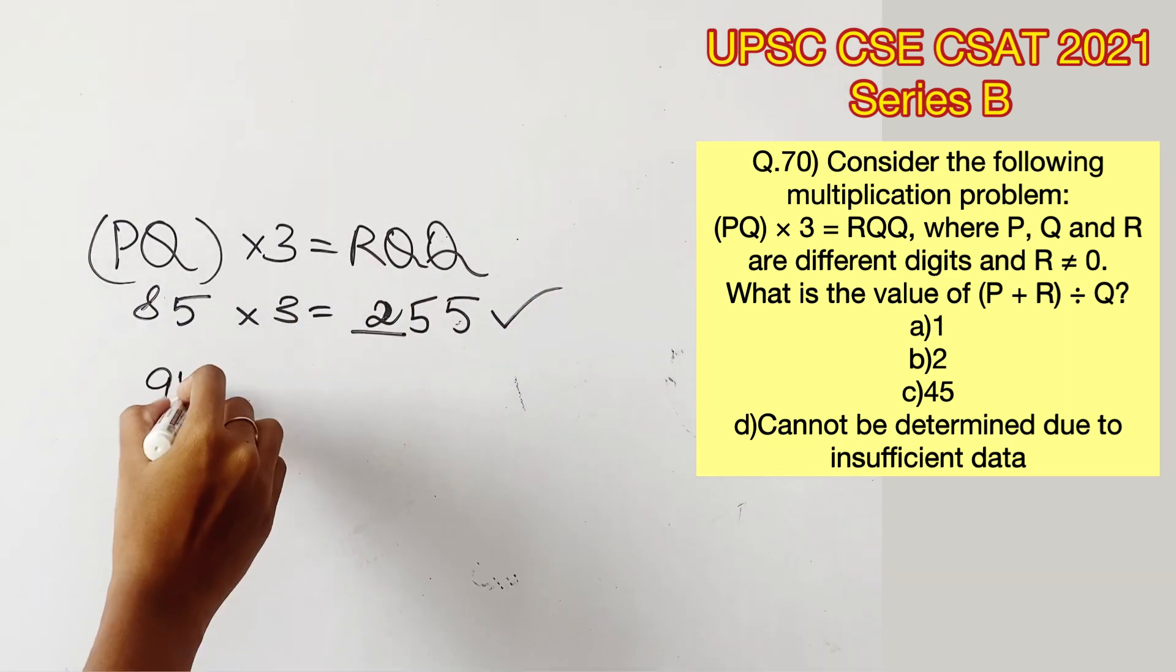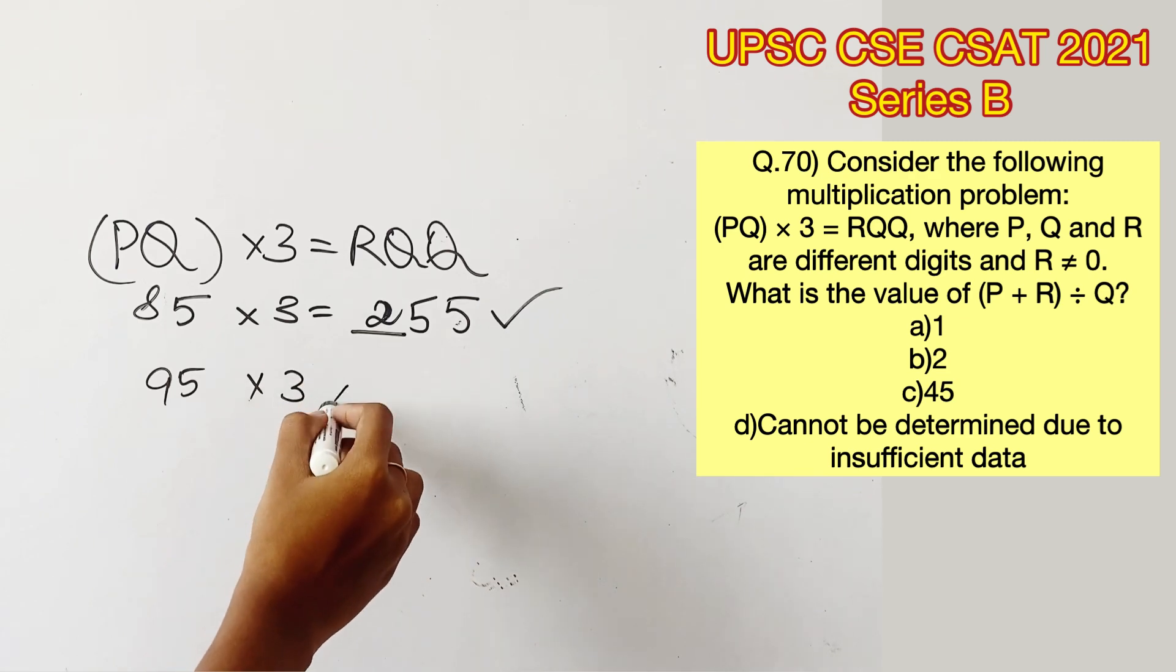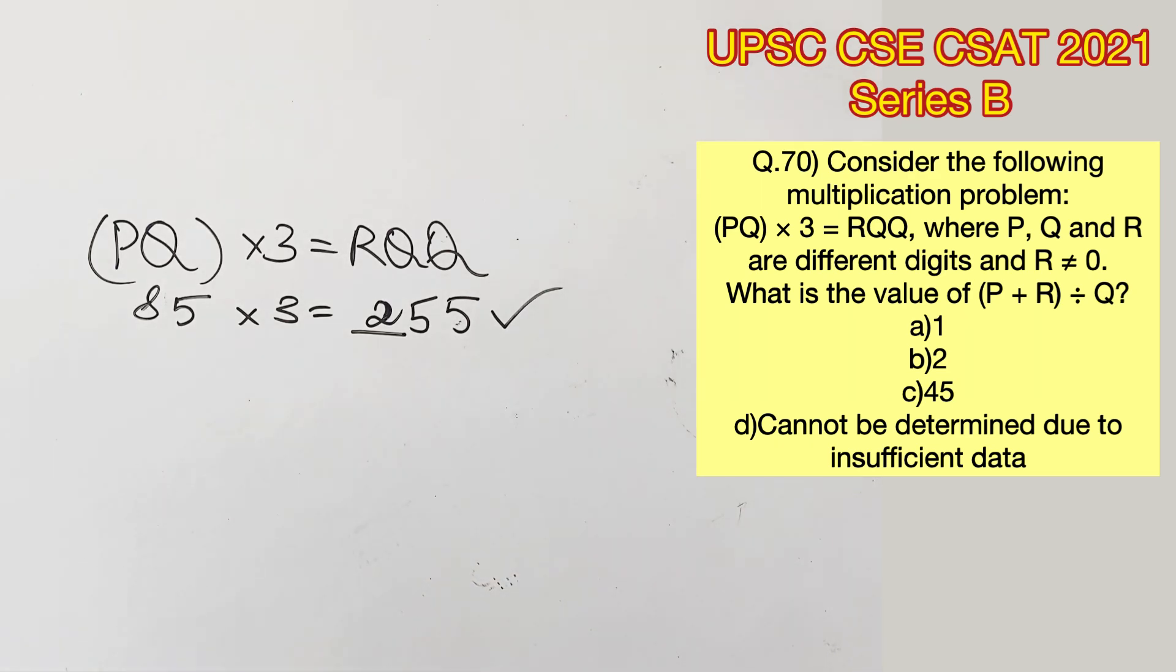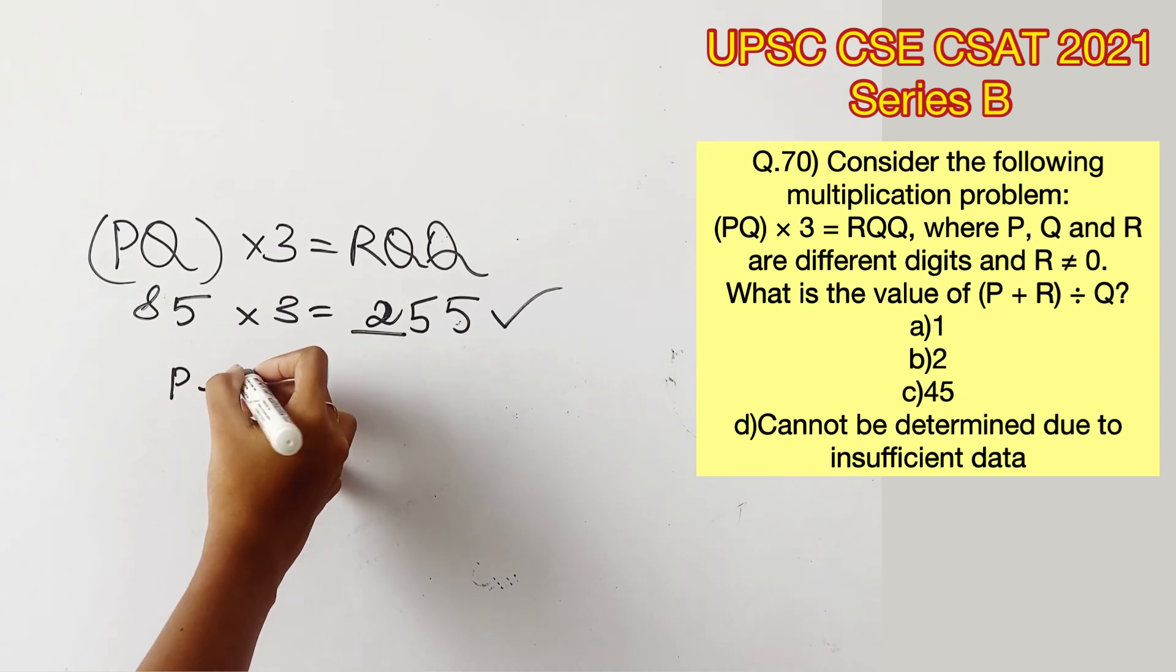Now this satisfies the equation. 95 into 3 will not satisfy this equation. Therefore there is only one possibility which can satisfy the given equation.